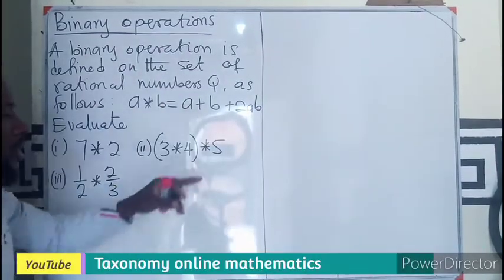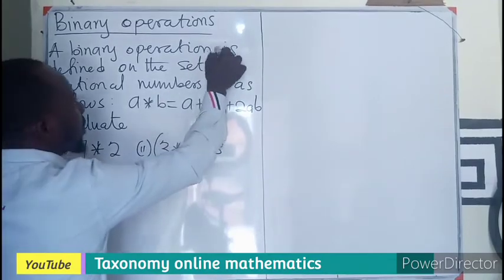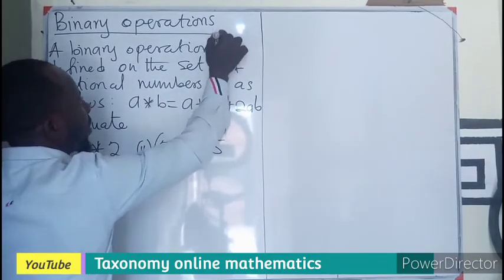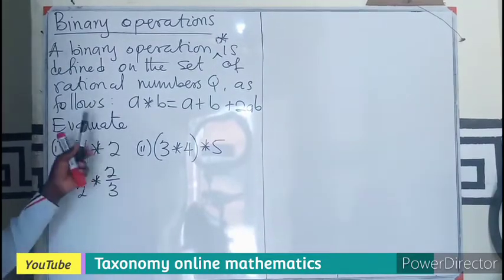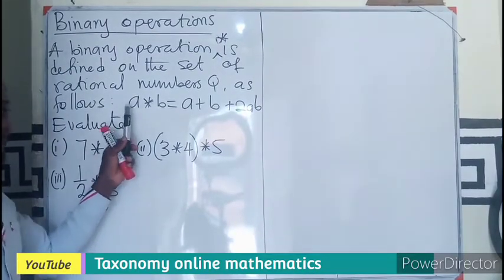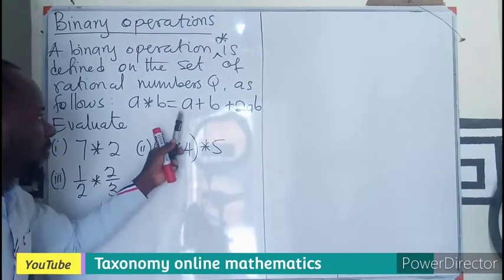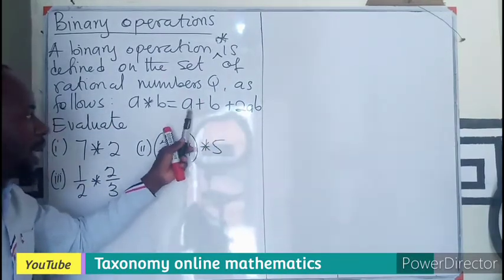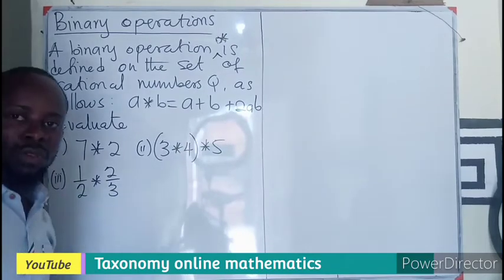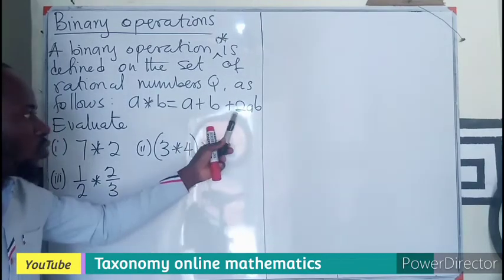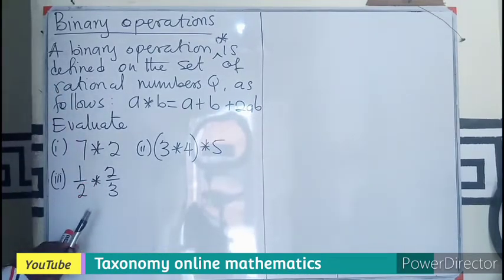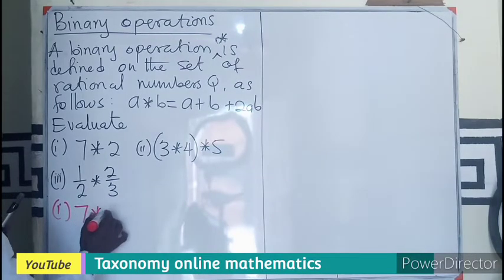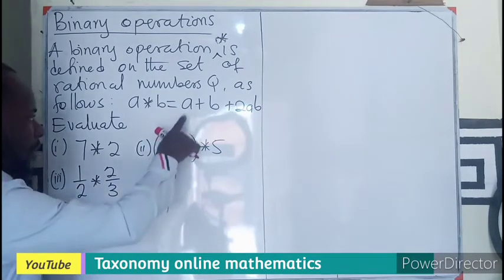A binary operation star is defined on the set of rational numbers as follows: a★b equals a plus b plus 2ab, meaning a plus b plus twice the product of the two numbers.